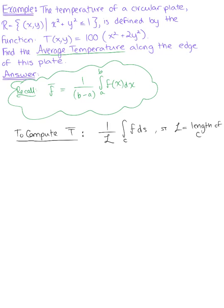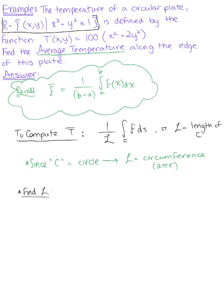Since our curve here is a circle, our length is going to be the circumference, which is 2πR. Our circle is the unit circle, so since R is equal to 1, our length is equal to 2π times 1, or just 2π.